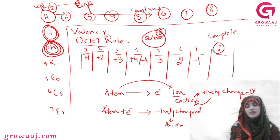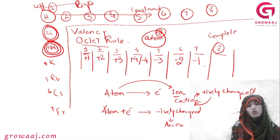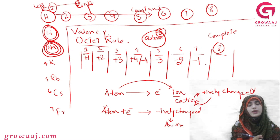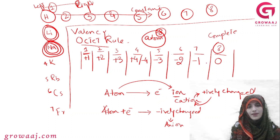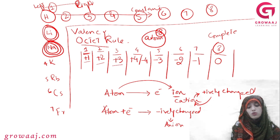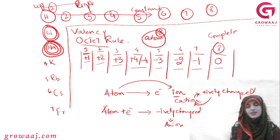Noble gases have a complete electron configuration, so elements in that group do not gain or lose electrons — their charge is 0. So we can summarize: valency is +1, +2, +3, then ±4, then -3, -2, -1, and 0 for noble gases.